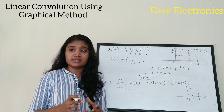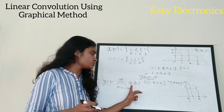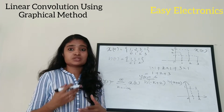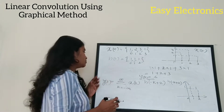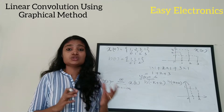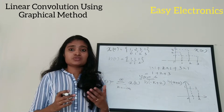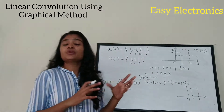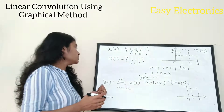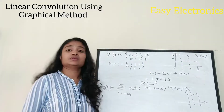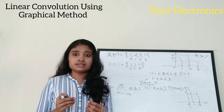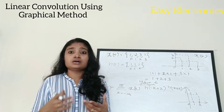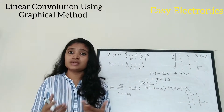So this is how to find the linear convolution graphically: first draw x of k, then draw h of k and take h of minus k, then successively compute h of minus k plus 1, h of minus k plus 2, h of minus k plus 3, and so on up to the required n value. For this case n varies from 0 to 5. At each step, take the product of the common terms and add them to get each y of n value.